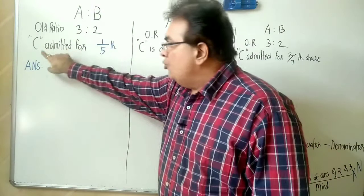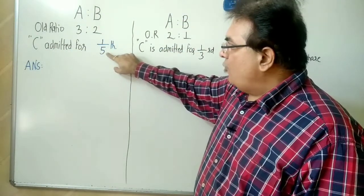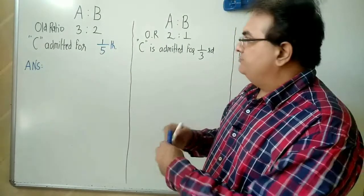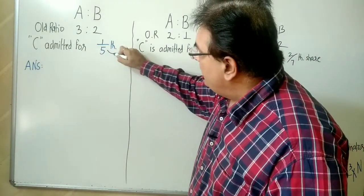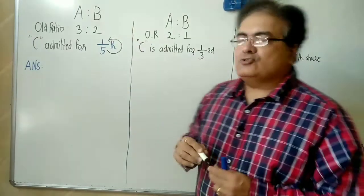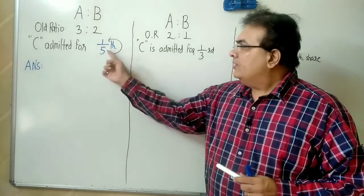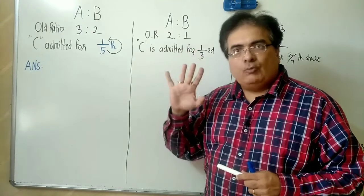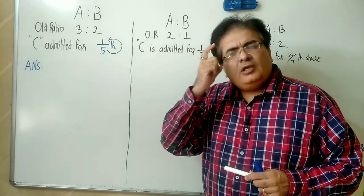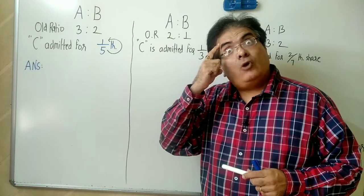The new partner's share is one-fifth. Step one: denominator minus numerator — 5 minus 1 equals 4. Keep 4 in your mind.